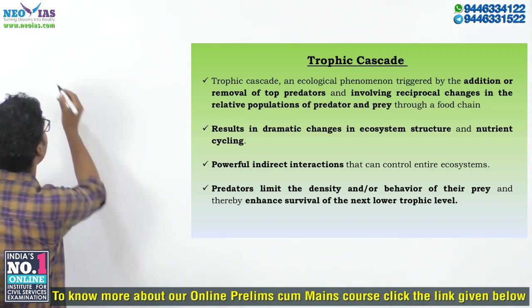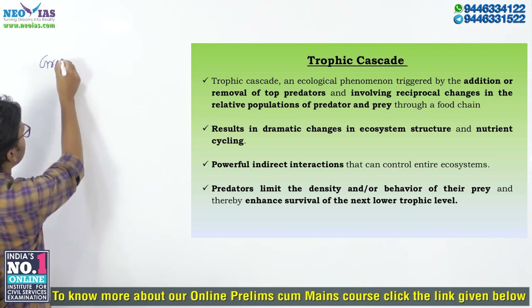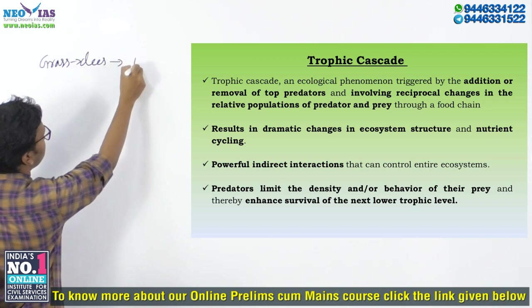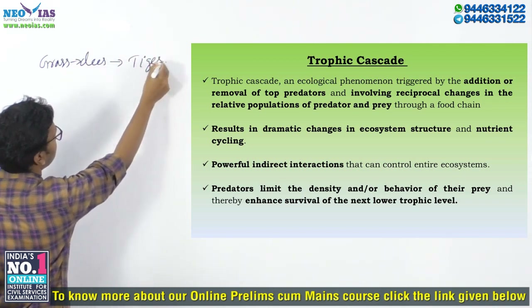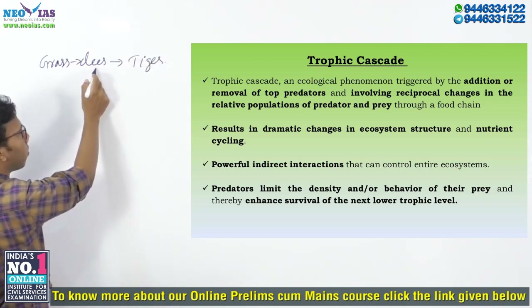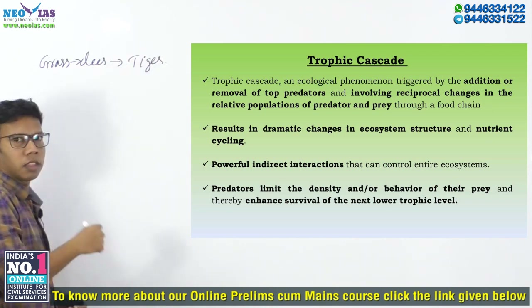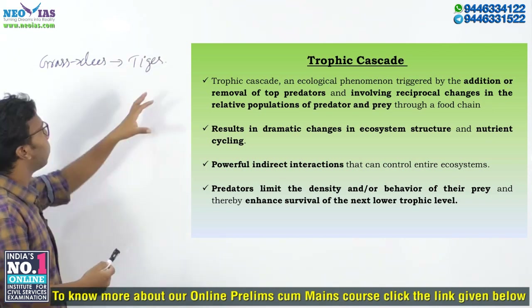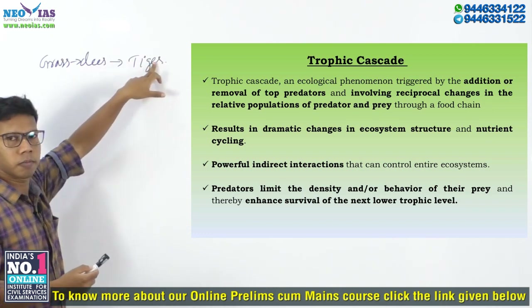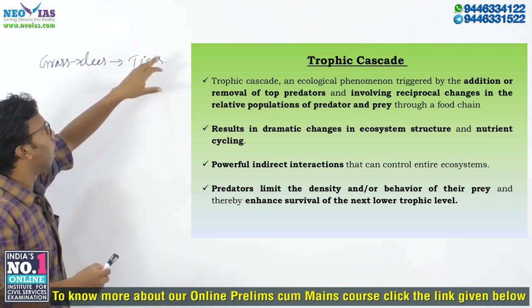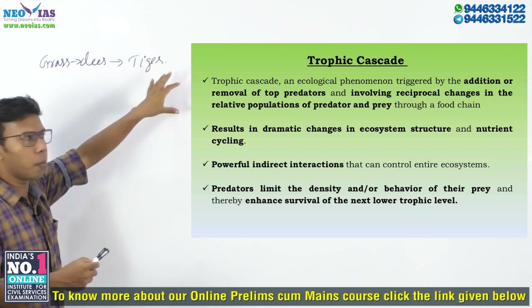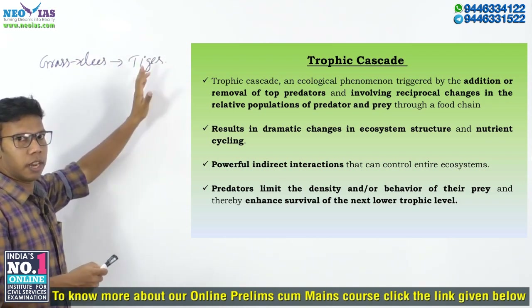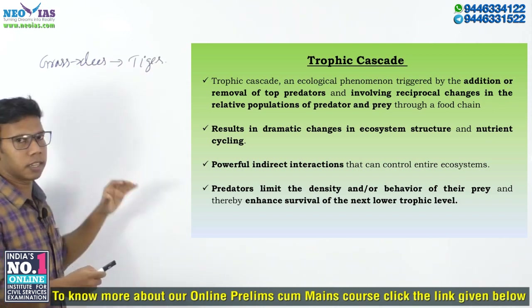Now, we can take Grass, Deer, then Tiger. This is the first Trophic Level, Deer is the second Trophic Level, and Tiger is the third Trophic Level. Trophic Cascade means the addition or removal of the top predators, and that will involve reciprocal changes in the relative population of the predator and prey in the food chain, and that is called Trophic Cascade.